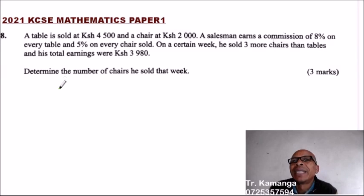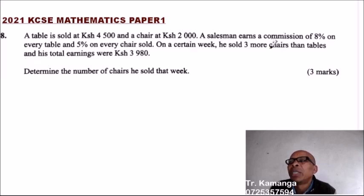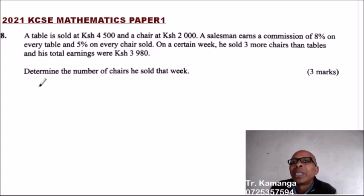Question number 8. A table is sold at 4,500 Kenyan shillings and a chair at 2,000 Kenyan shillings. A salesman earns a commission of 8% on every table and 5% on every chair sold. On a certain week, he sold 3 more chairs than tables and his total earnings were 3,980. Determine the number of chairs he sold that week.